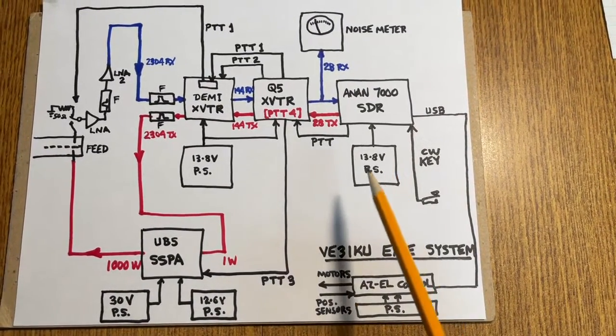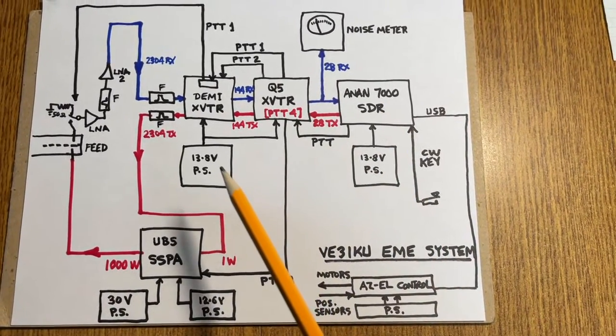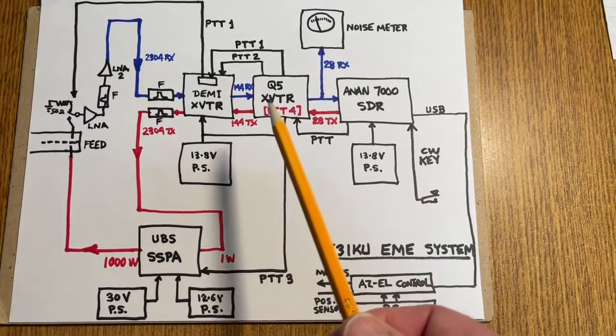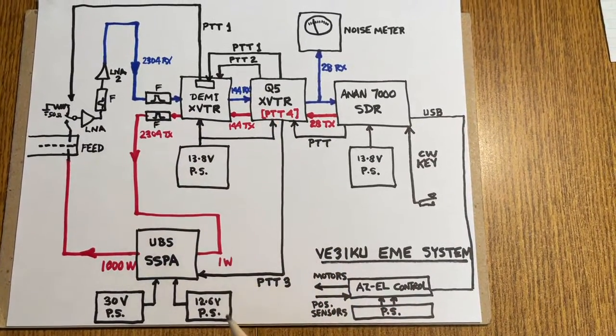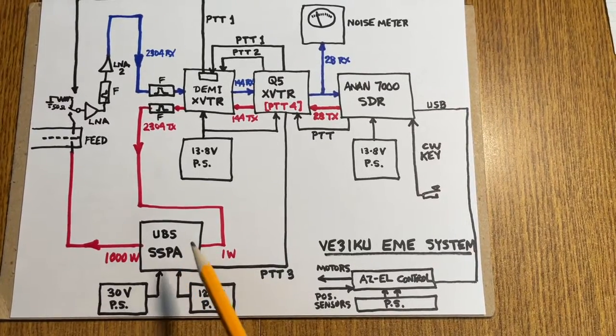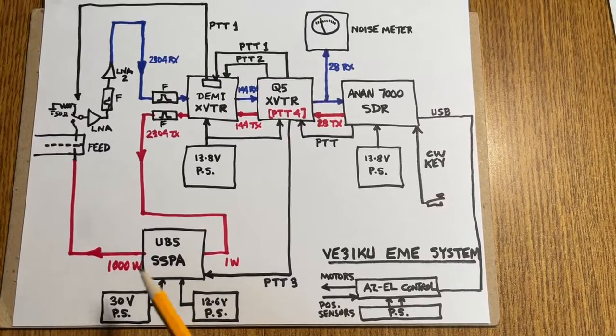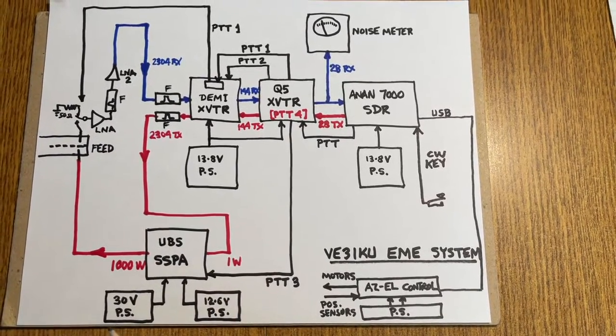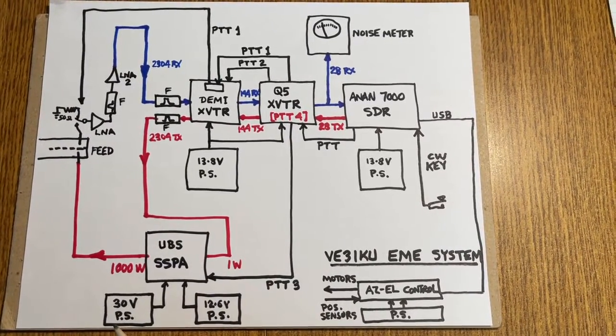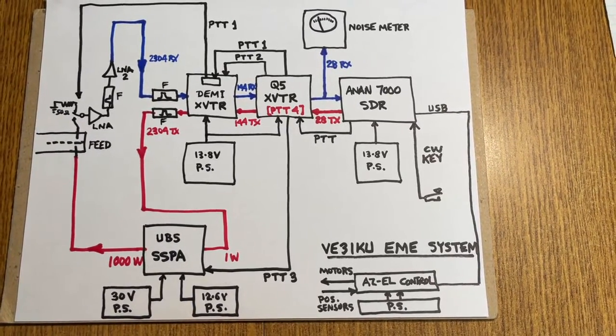So there's a 13.8-volt power supply for the ANAN, a 13.8-volt power supply for the two transverters, a 12.6-volt power supply for the solid-state PA fans and bias circuits and low-level stages and microprocessors, and a 30-volt power supply at 80 amperes for the PA stages.